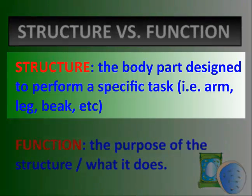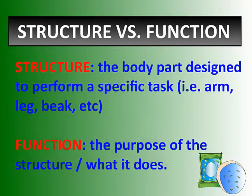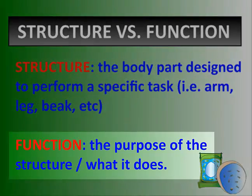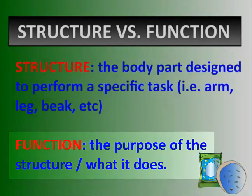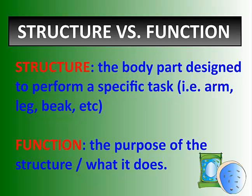A structure is a body part designed to perform a specific task — that could be a leg, a beak, an arm, a snout, a claw, whatever. The function is the purpose of the structure, or what it does. So if we ask what structure allows us to perform the eating function, for people the structure is the mouth and the function is to eat.